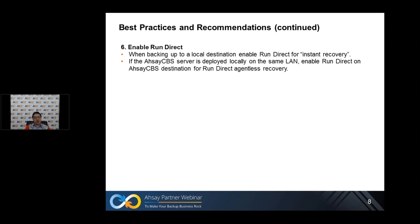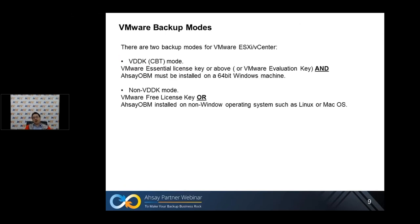Six: enable run direct. When backing up your VMs to a local destination, enable run direct for instant recovery. And if the CBS server is deployed locally on the same LAN, enable run direct for agentless recovery. Now let's talk about the VMware backup modes. There are two backup modes for VMware ESXi vCenter backups.